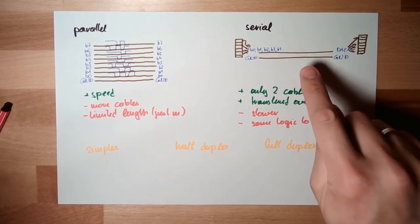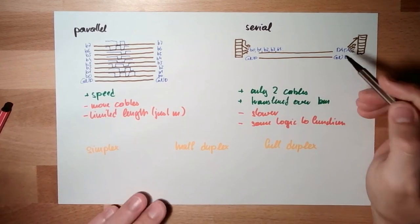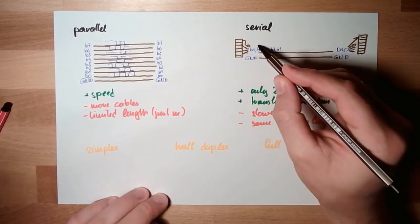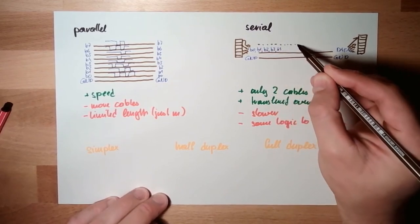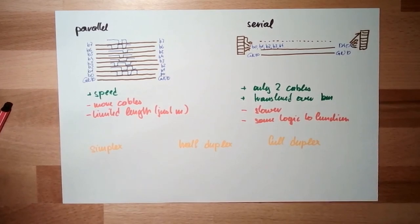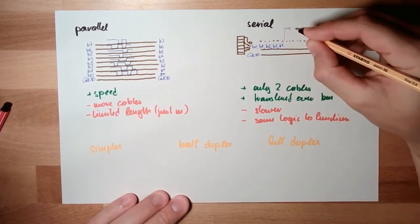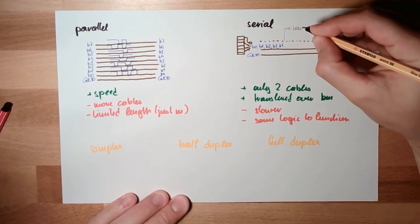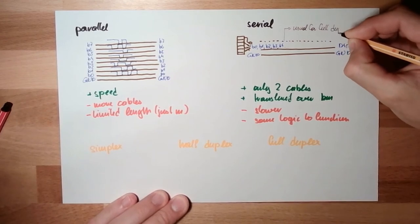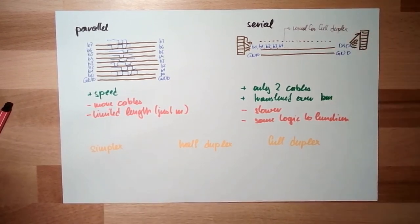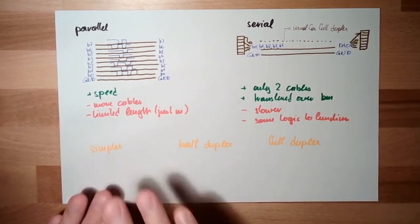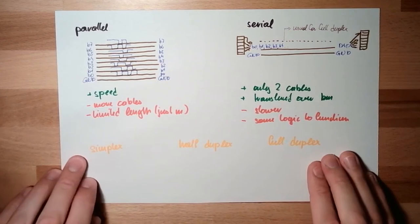In full duplex communication here in serial mode, we usually have a transmit line and a receive line. So we have three lines here. Usual for full duplex: one is transmitted, one is received, and usually they are crossed to each other. Art of communication.